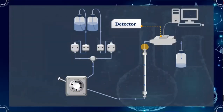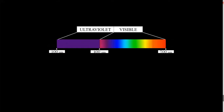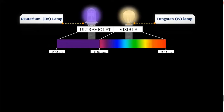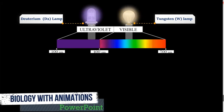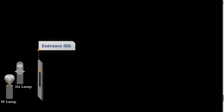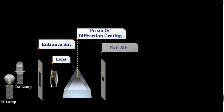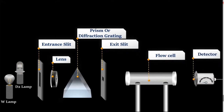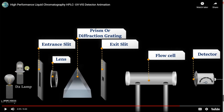As compounds elute from the column, they interact with the detector. Different types of detectors can be used: the UV-Vis detector, which shows absorption in the ultraviolet or visible region. For UV detection, a deuterium discharge lamp is used as the light source; for visible region detection, a tungsten lamp is used. The detector also contains an entrance slit, lens, prism or diffraction grating, exit slit, flow cell, and a photodetector for absorption measurement.